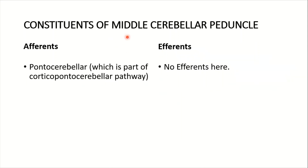Concerning the middle cerebellar peduncle: its afferents are the pontocerebellar tract, which is part of the corticopontocerebellar pathway. There are no efferents here. So the middle cerebellar peduncle has only afferents — the pontocerebellar — which is very important.